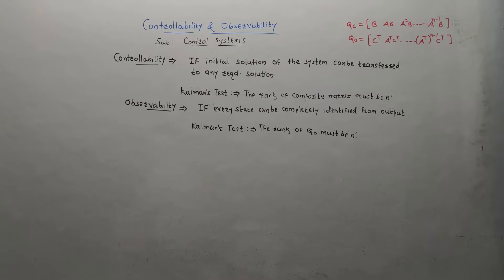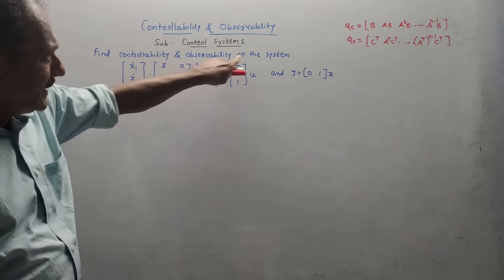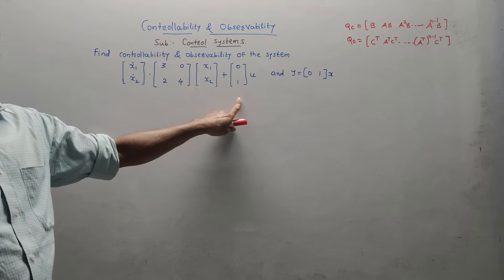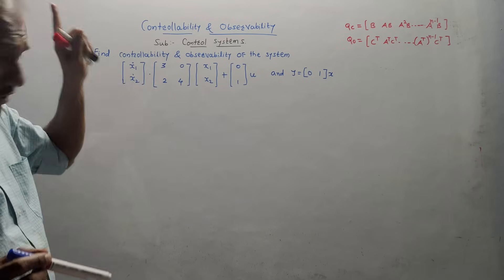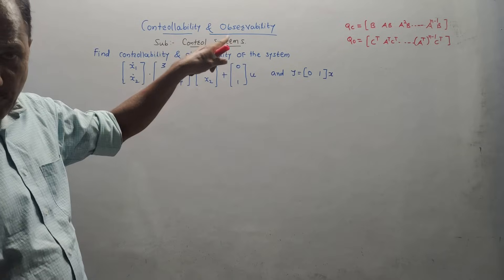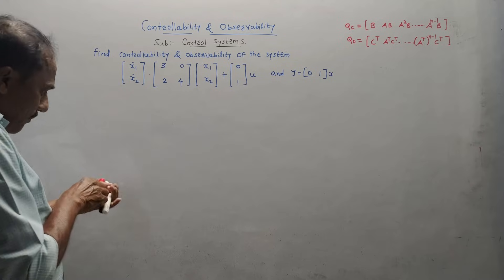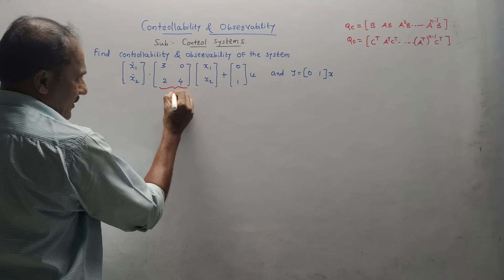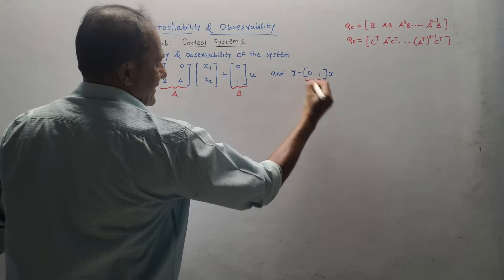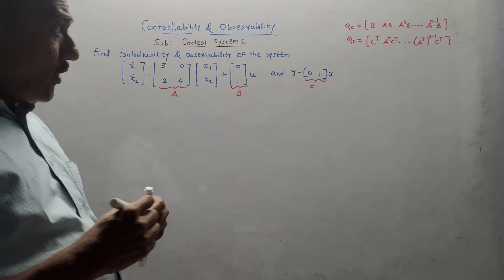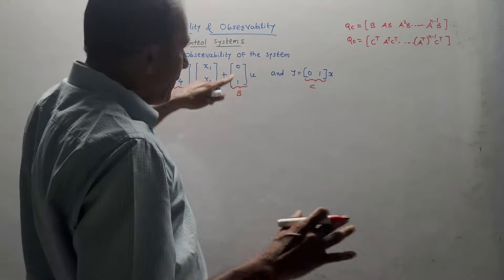Now let us start solving the numericals related to this. The first numerical is: find controllability and observability of the system. This is the given state equation of the system. These numericals are very simple; you should not skip this type of numerical as far as the exam point of view is concerned. We know the usual procedure. This matrix is matrix A, this is matrix B, and this is matrix C.